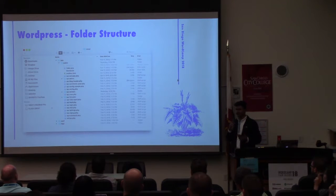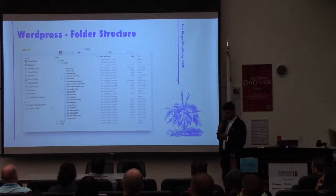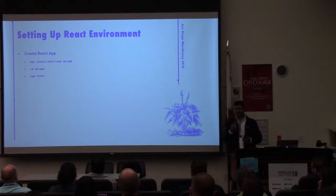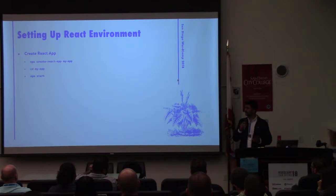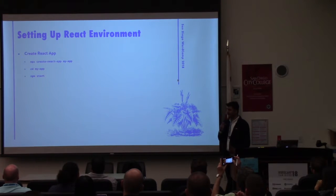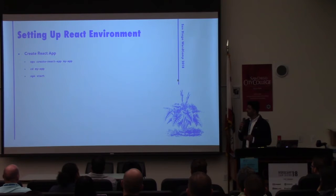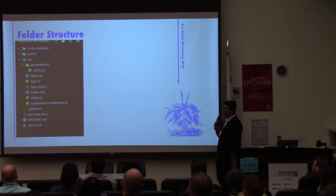The WordPress folder structure is very basic — it's a simple WordPress install in the app folder if you're using Local. The React environment is pretty simple as well. The folks at Facebook who created React also created Create React App, which is a kind of sandbox for React. It lets you get up and running with just a quick NPM install and NPM start. The folder structure is a source folder with components, App.js, and Index.js, and that's about it.